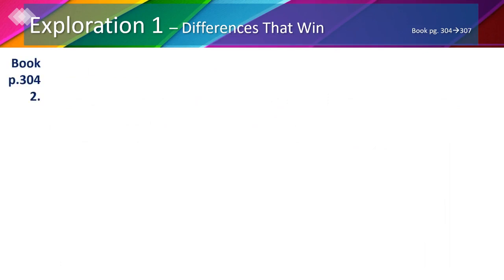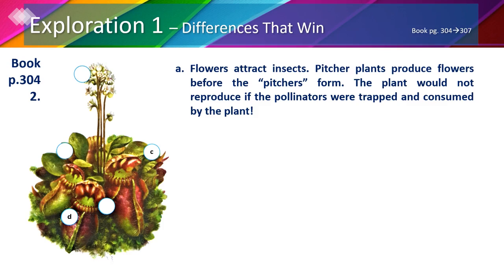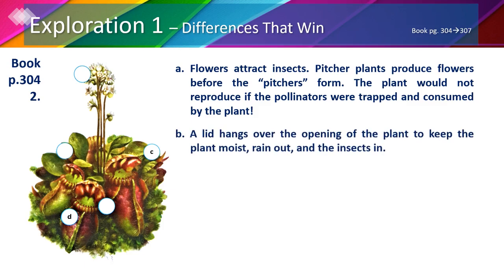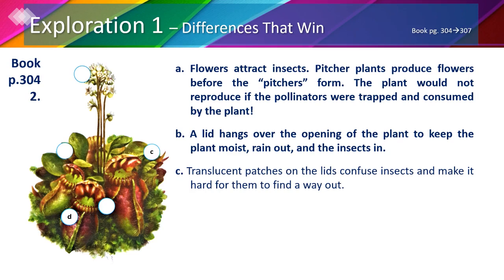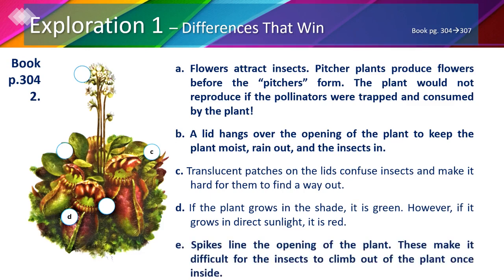On page 304 number 2, we will discuss some of the pitcher plant's characteristics and write the missing letter in the circles. A: flowers attract insects — pitcher plants produce flowers before the pitchers form, so the plant would not reproduce if the pollinators were trapped. B: a lid hangs over the opening to keep the plant moist, keep rain out, and keep insects in. C: translucent patches on the lids confuse insects and make it hard to find a way out. D: if the plant grows in shade it's green; in direct sunlight it is red. E: spikes line the opening, making it difficult for insects to climb out.